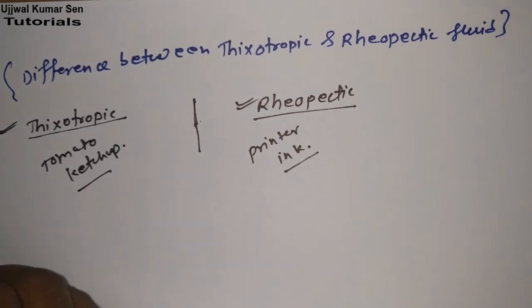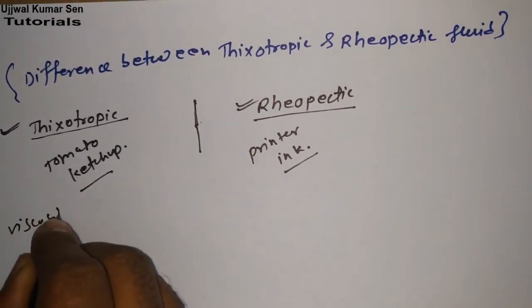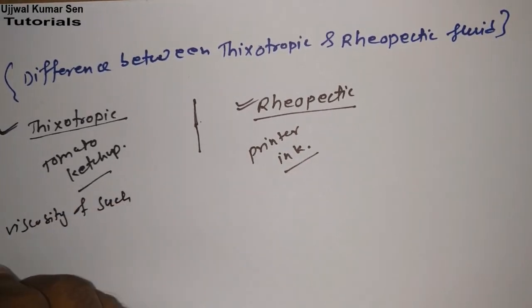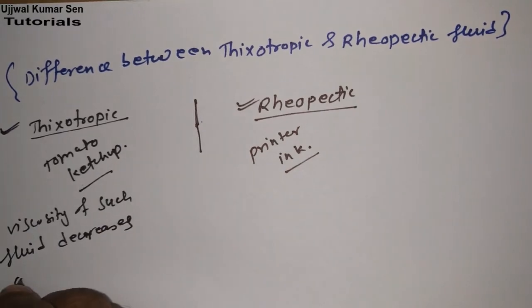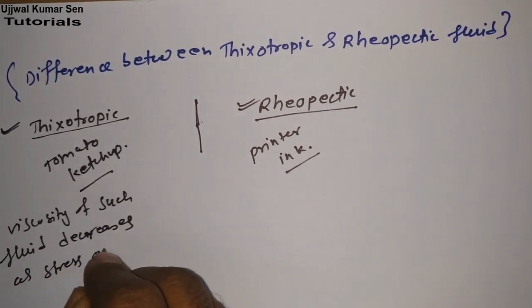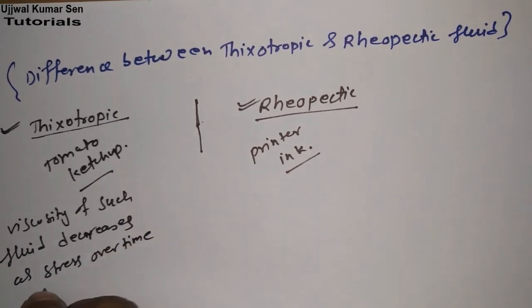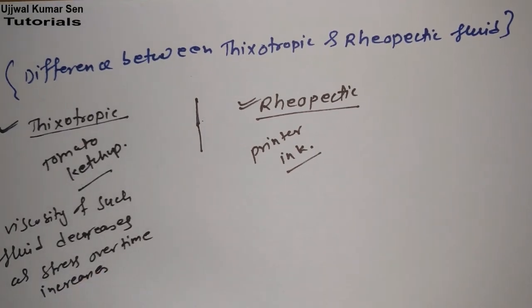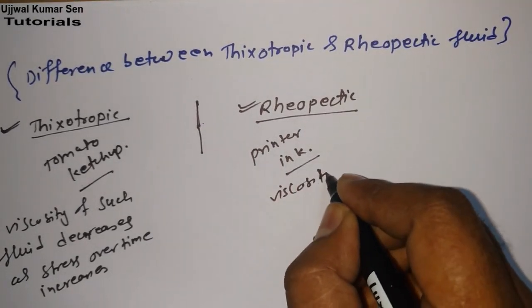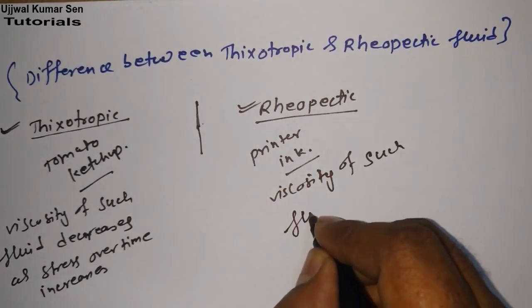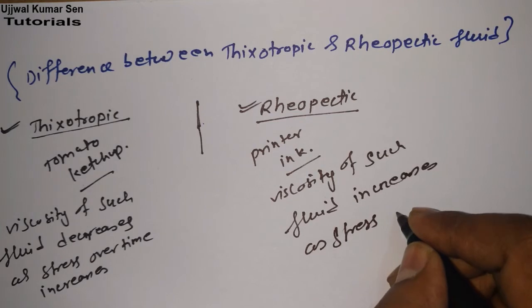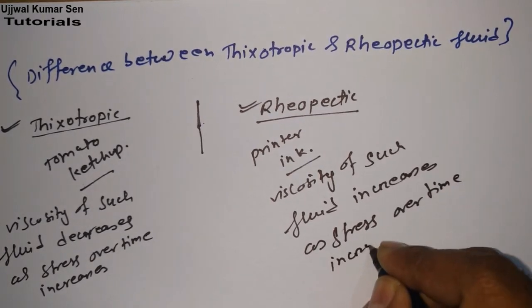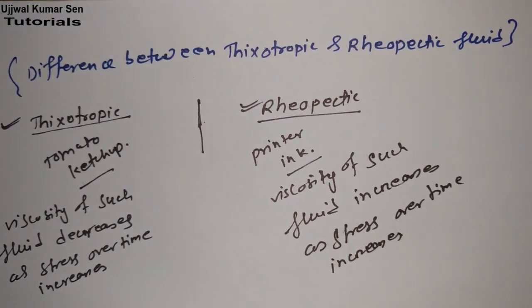Let's talk about thixotropic and rheopathic here only. The definition of thixotropic fluid is: viscosity of such fluid decreases as stress over time increases. For rheopathic fluid: viscosity of such fluid increases as stress over time increases. So both have opposite functions.